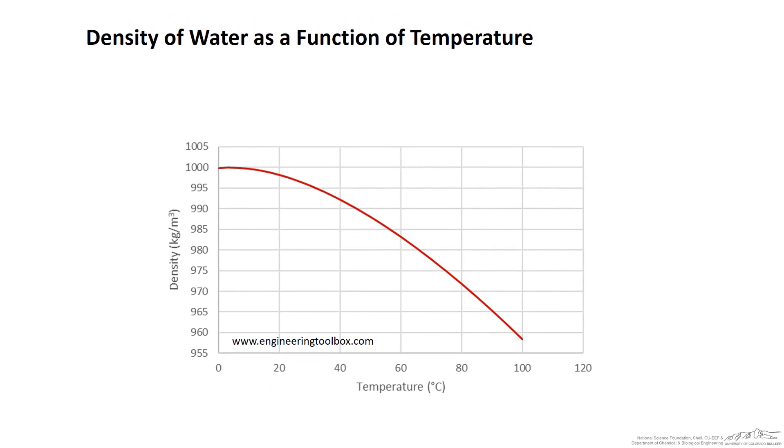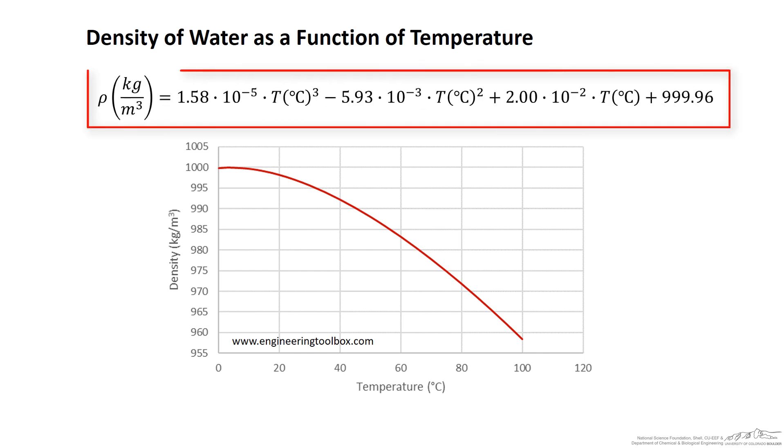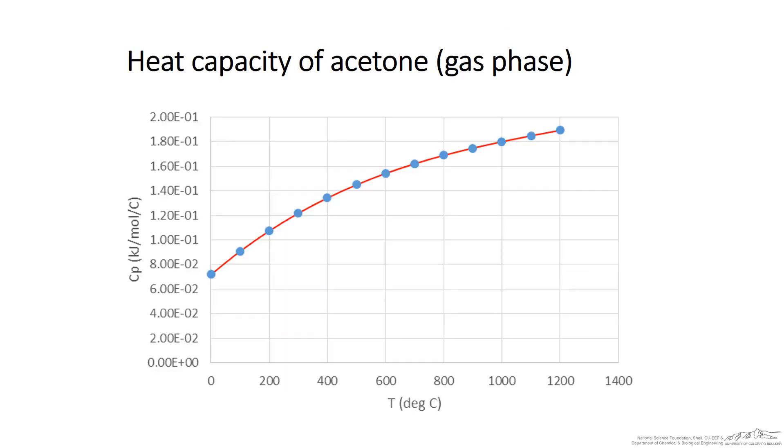Another example is the density of water as a function of temperature. The experimenter collects data - which aren't shown but might have many data points - and comes up with a model that best fits those experimental data. This gives a third-order polynomial in temperature (in Celsius) to predict water density in kilograms per cubic meter.